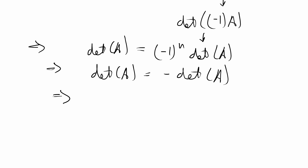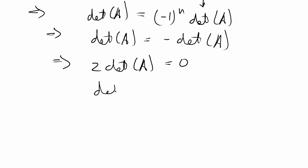If we bring this to the same side, we get 2 times the determinant of A equals 0. Dividing by 2, the determinant of A equals 0 divided by 2, which is equal to 0. And we're done with this proof.